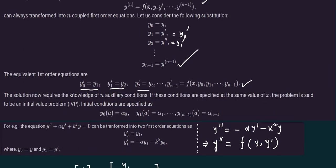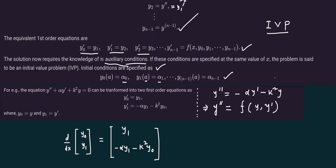This can be solved if we know n auxiliary conditions, which are called initial conditions — this is the IVP, initial value problem. If these conditions are specified at the same value of x, the problem is an initial value problem. We have initial conditions: y0 at x equals a is alpha0, y1 at x equals a is alpha1, and so on up to y n minus 1 at x equals a is alpha subscript n minus 1.